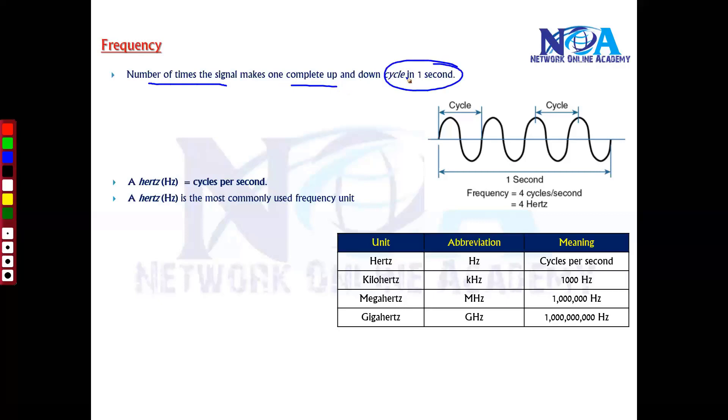If we try to understand a cycle - one cycle represents the starting point. It goes up, down, and comes back to the same specific point. We call this one cycle. No matter where you start, the complete sequence back to the same starting point is what we call a cycle.